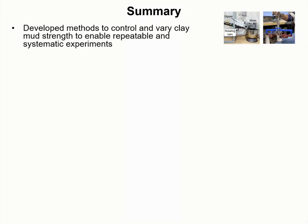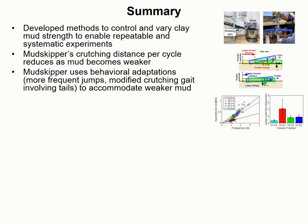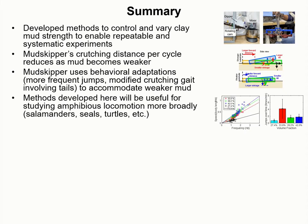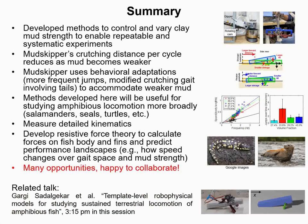To summarize, we have developed different methods to control and vary the mud strength to enable repeatable and systematic experiments. We found that the mudskipper's crossing distance per cycle reduces as the mud gets weaker, and it uses behavioral adaptations to accommodate weaker mud. Methods developed here will be useful for studying amphibious locomotion more broadly. For future work, we will measure detailed kinematics and develop resistive force theory to calculate the forces on the fish body and fins and predict performance landscapes. Please see another talk later in the session for more detail about the template-level robo-physical model to study sustained terrestrial locomotion of amphibious fish species.